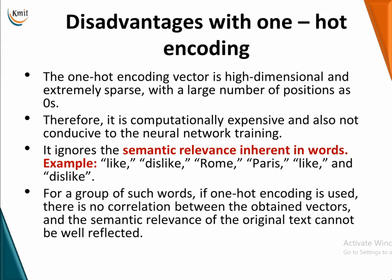One-hot encoding is a very high-dimensional encoding and it is extremely sparse, with a large number of positions being zero. It is computationally expensive and not conducive to a neural network training environment. It also ignores the semantic relevance inherent in words — for example, like and dislike. So when you use one-hot encoding, there will be no correlation amongst the obtained data and the semantic relevance of the original text will not be properly reflected.